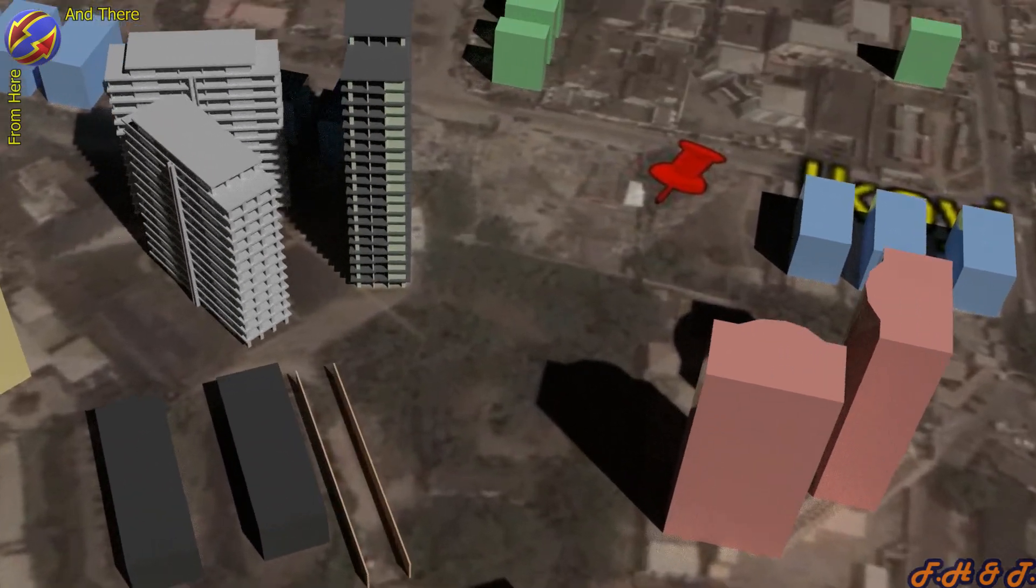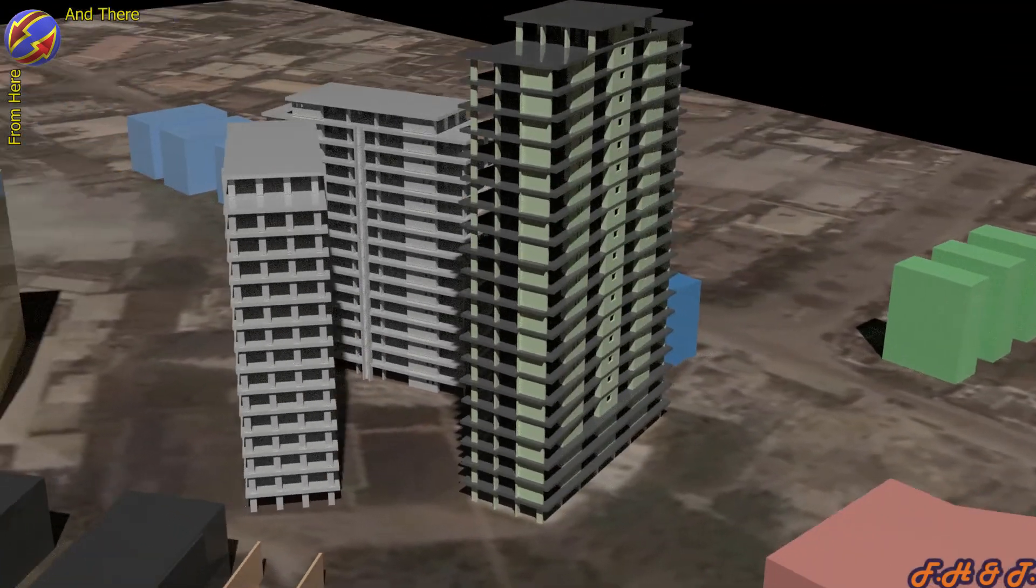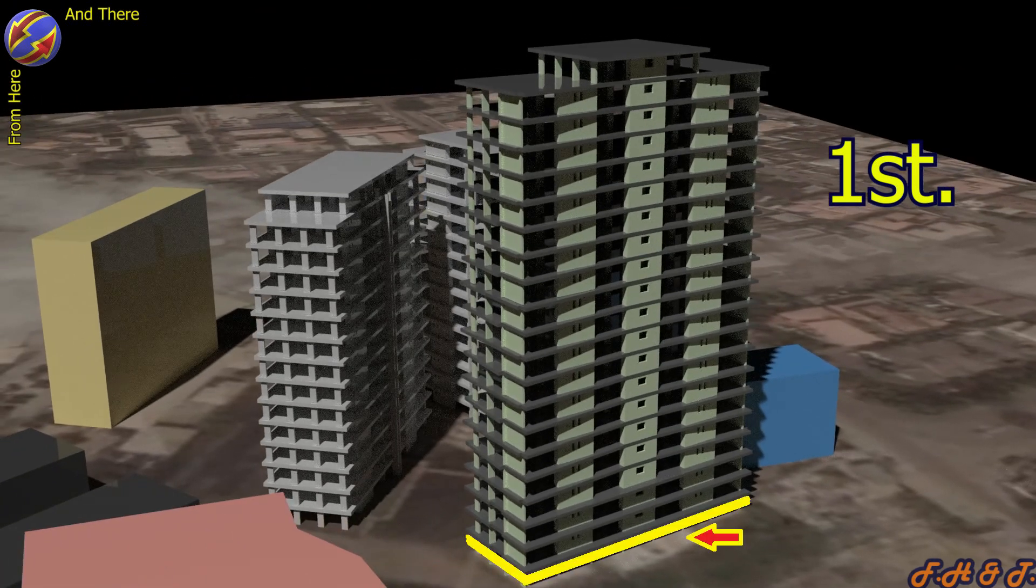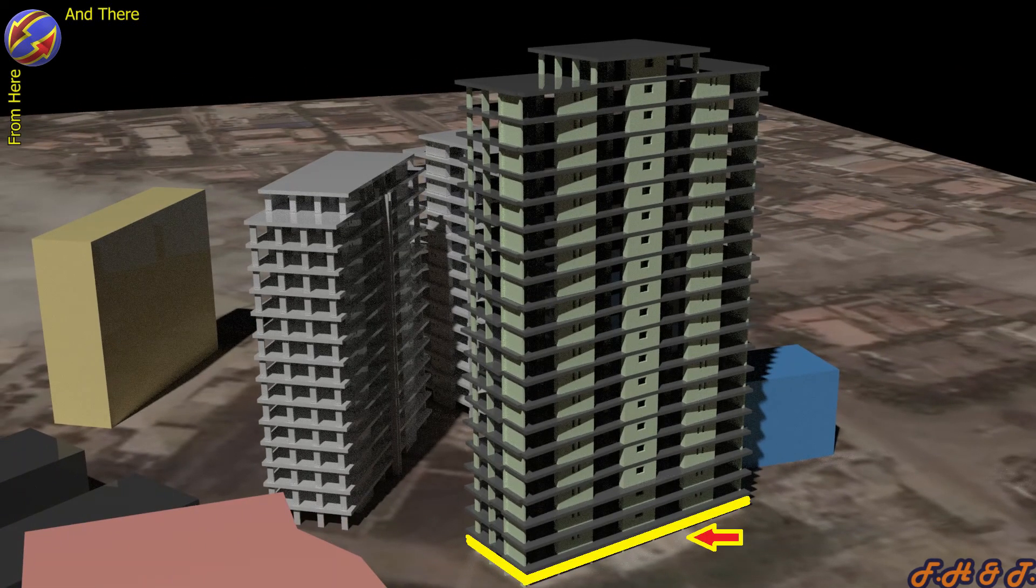Pancake collapse of a building under construction. First scenario: The collapse started in the columns of the ground floor upwards.